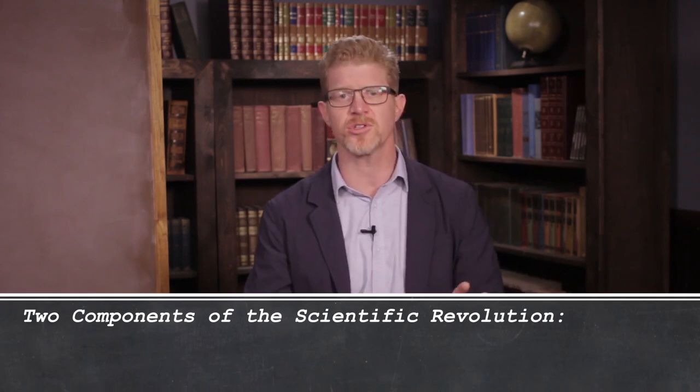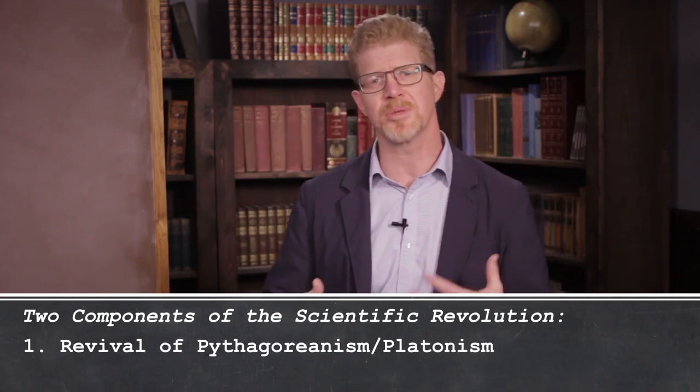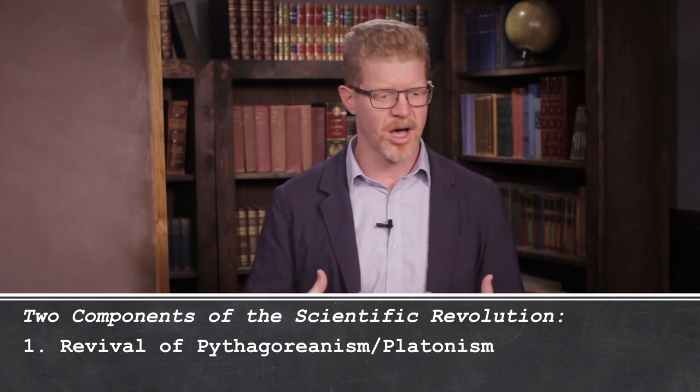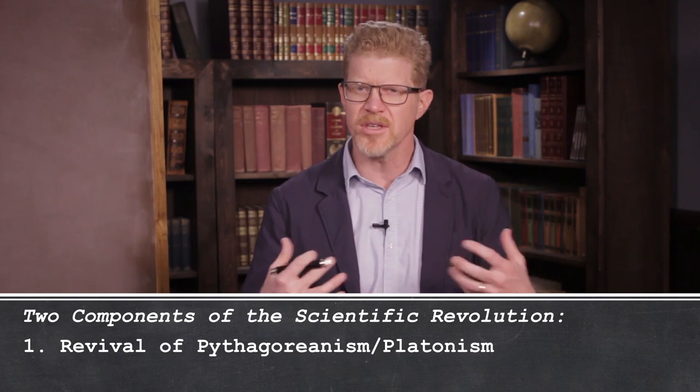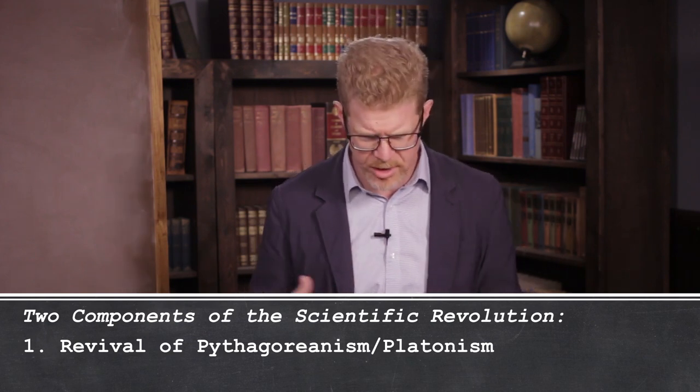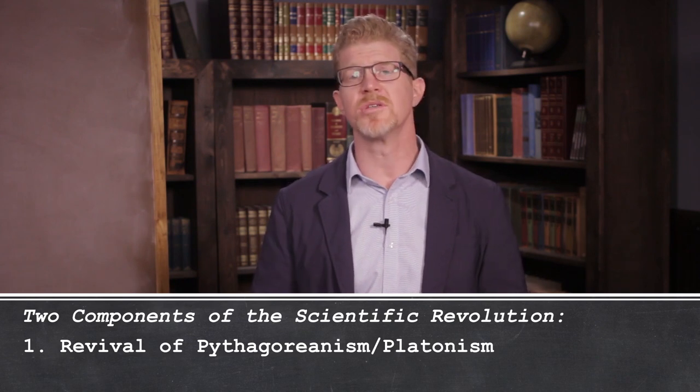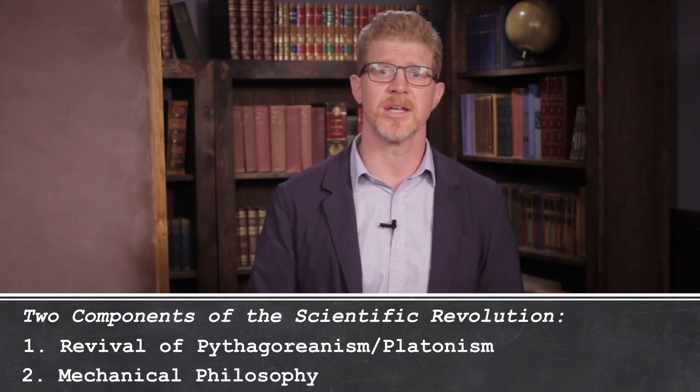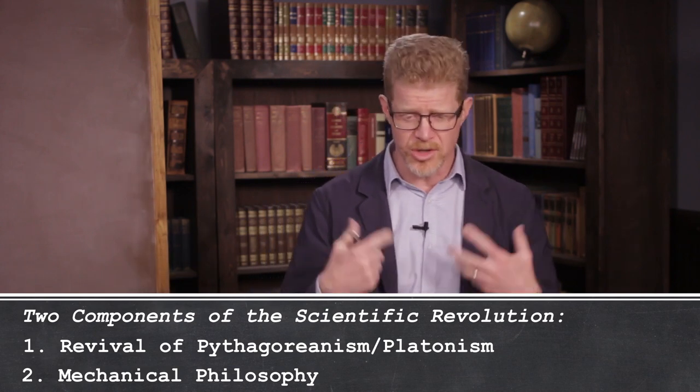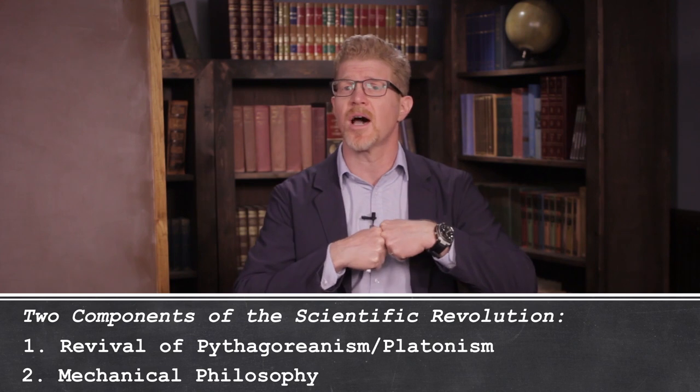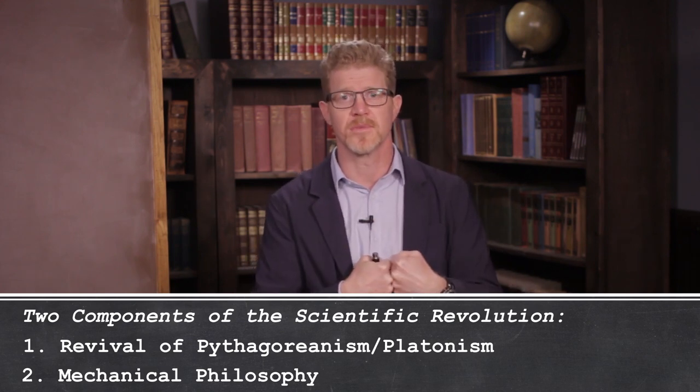And remember, a revolution is an overthrowing. So it's an overthrowing of someone or something. And we saw that it was an overthrowing of Aristotle, the Aristotelian science. There were two components to the scientific revolution, the two main components. The first one was the revival of this Pythagoreanism, this Platonism, this view that the world, the cosmos, is ultimately mathematical. So everything is fundamentally mathematical, at least when it comes to the physical world.